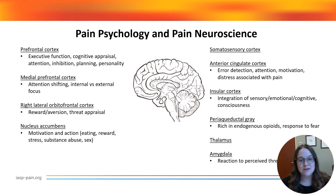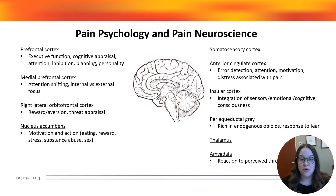The medial prefrontal cortex is associated with the top-down regulation of sensory attention and affective processes. This area is associated with shifting attention between internal and external focus. Persistent pain is associated with changes in the function and structure of the medial prefrontal cortex, reflected in cognitive function changes and changes in attention. The right lateral orbital frontal cortex is associated with reward and aversion processes, and importantly for pain, threat appraisal. It may also be involved with pain modulation related to reward.